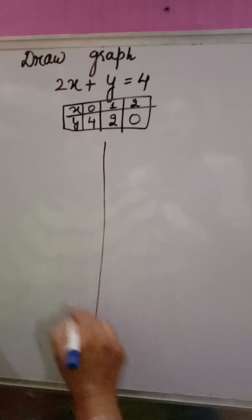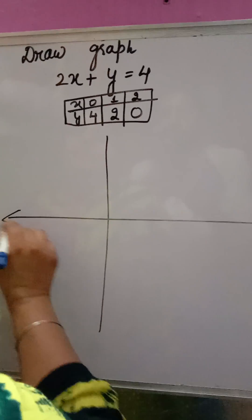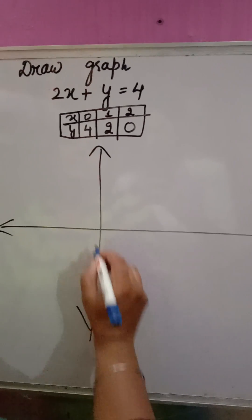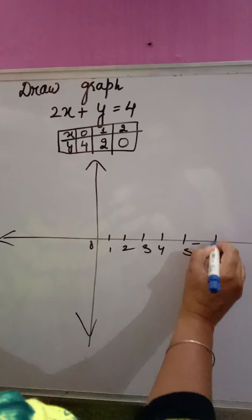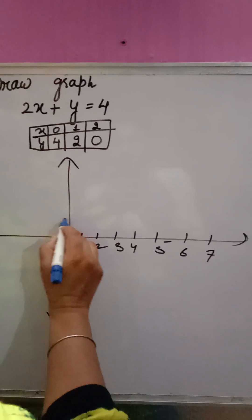Now you can make the graph. This is x axis, this is y axis. Here 0, 1, 2, 3, 4, 5, 6, 7.